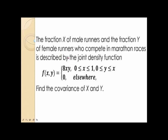Let's have this example. The fraction x of male runners and the fraction y of female runners who compete in marathon races are described by the joint density function f of xy equal to 8xy, where x takes values from 0 to 1 and y takes values from 0 to x, and f of xy equals 0 elsewhere. We need to find the covariance of x and y.